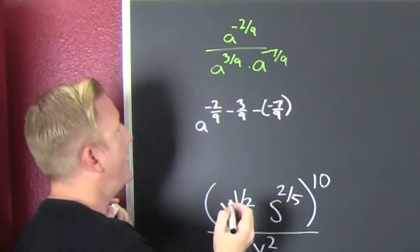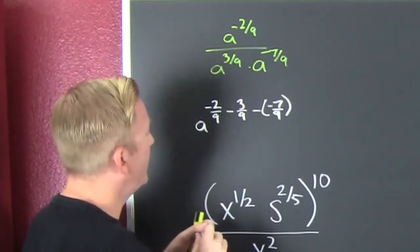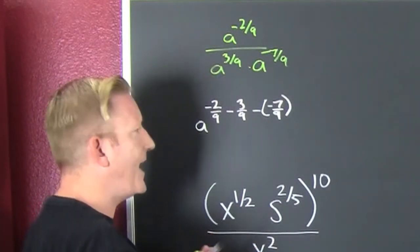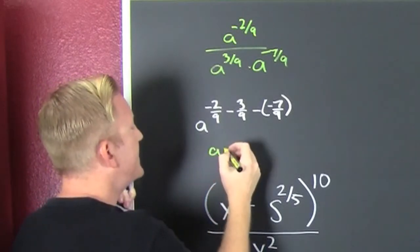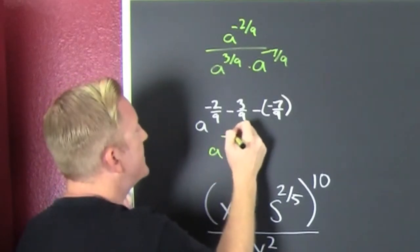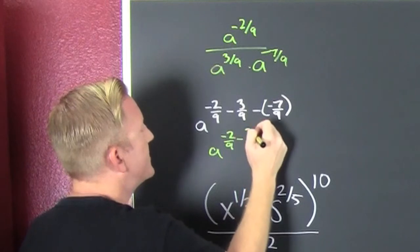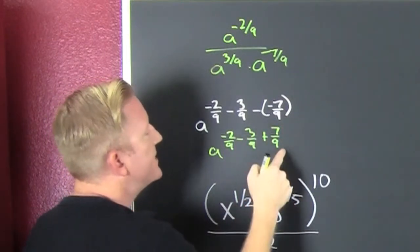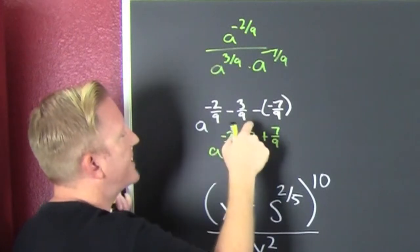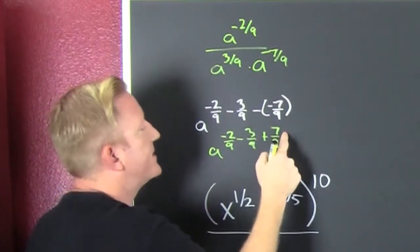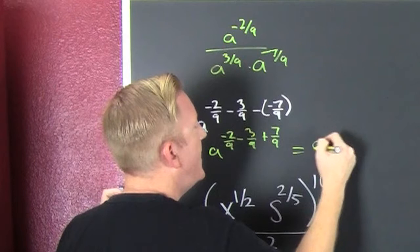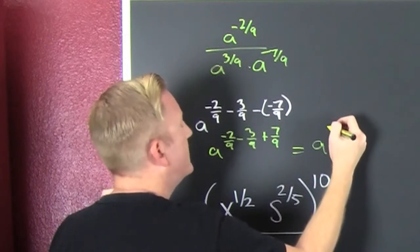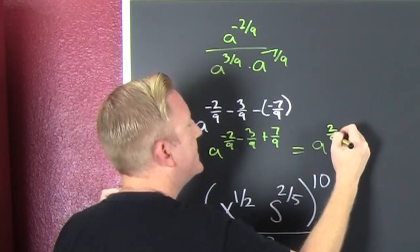Now if it's in the denominator, it's minus 3 ninths. If it's in the denominator, it's minus a minus 7 ninths. So that's a to the minus 2 ninths minus 3 ninths plus 7 ninths. Since they all have that common denominator, that's a minus 5 plus 7. So then, that's a to the 2 ninths.